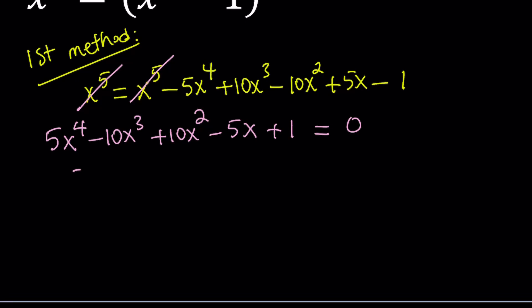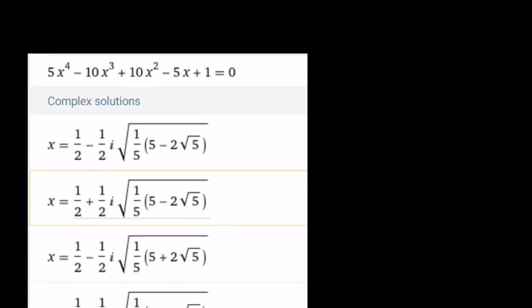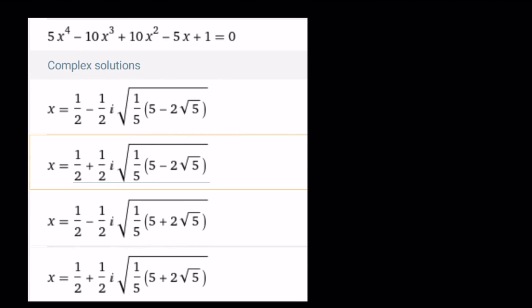You're going to get something like 5x squared minus 10x plus 10 minus 5 over x plus 1 over x squared. And then you kind of put these two together. That's going to give you 5x squared plus 1 over x. That's not going to work well. Maybe there's another way to handle it. But whatever that is, the solutions are not going to be very nice. And guess what? They're going to be complex. None of the solutions are going to be real, unfortunately.